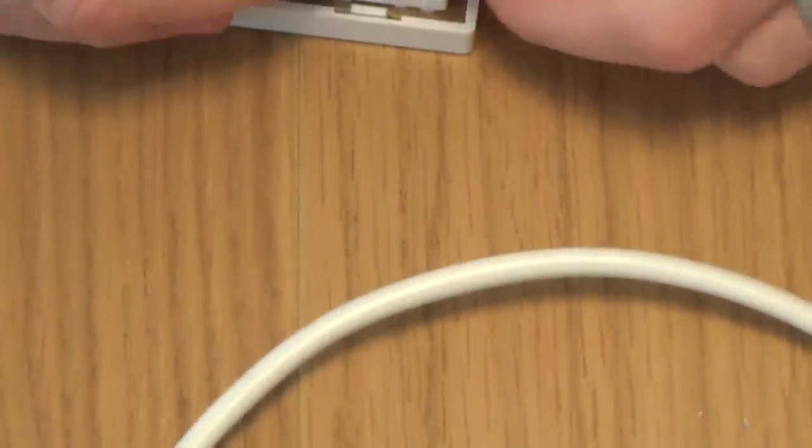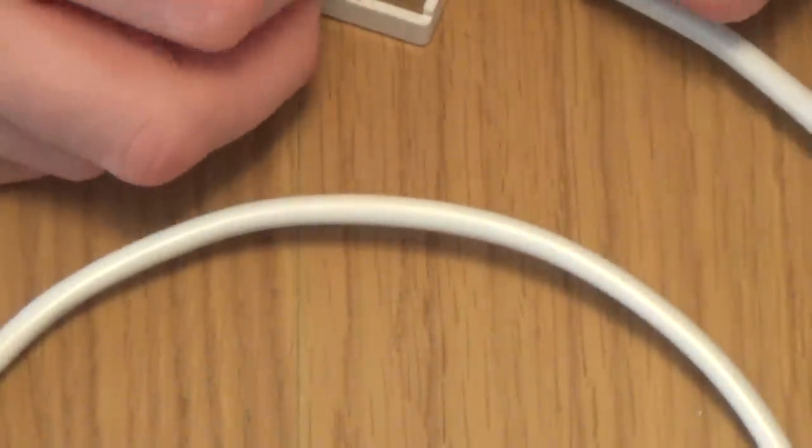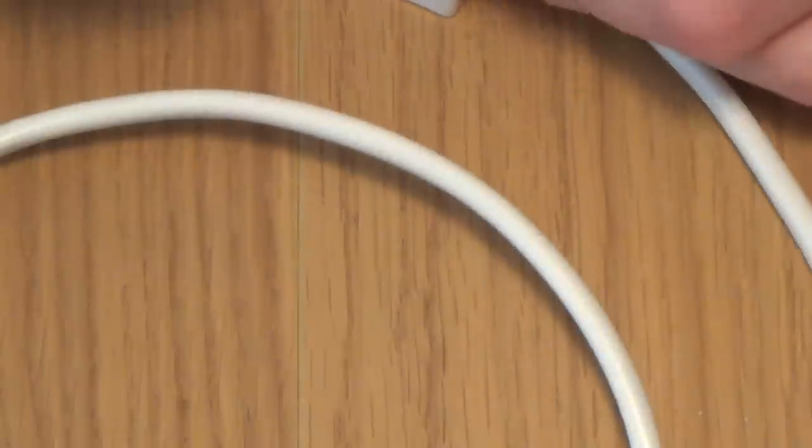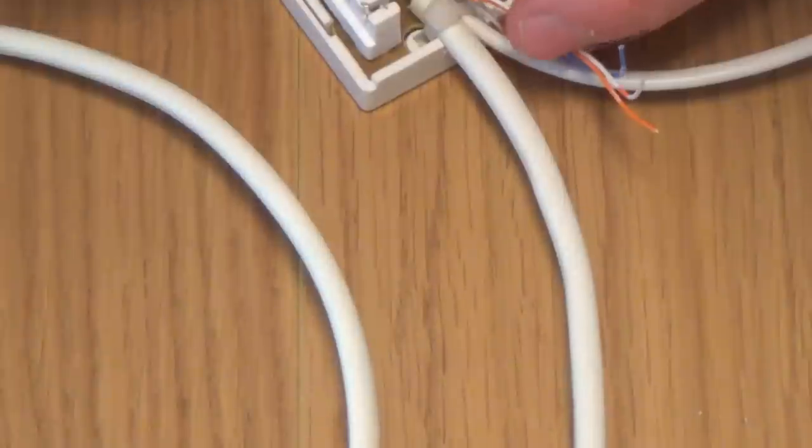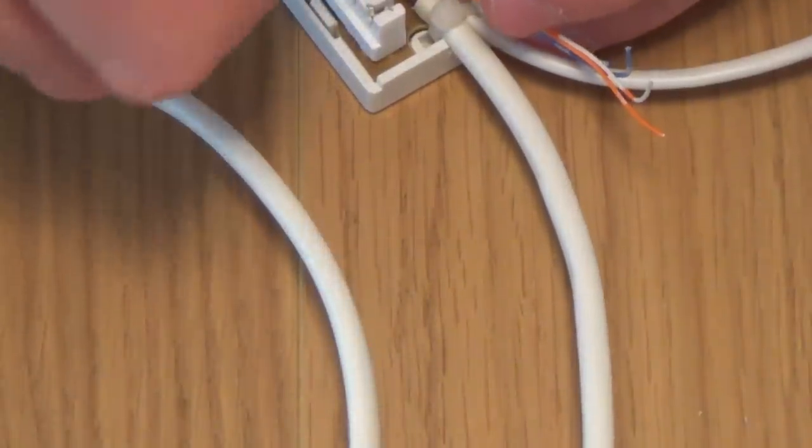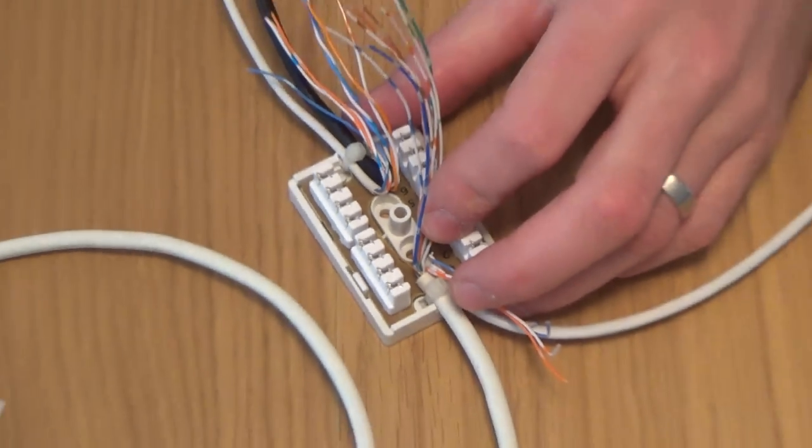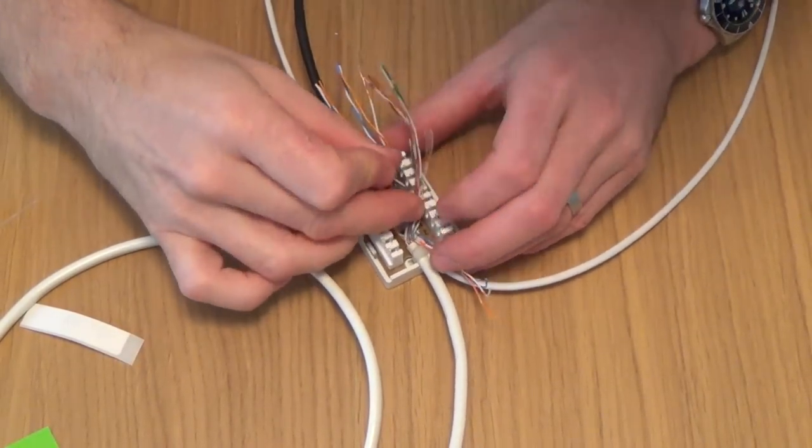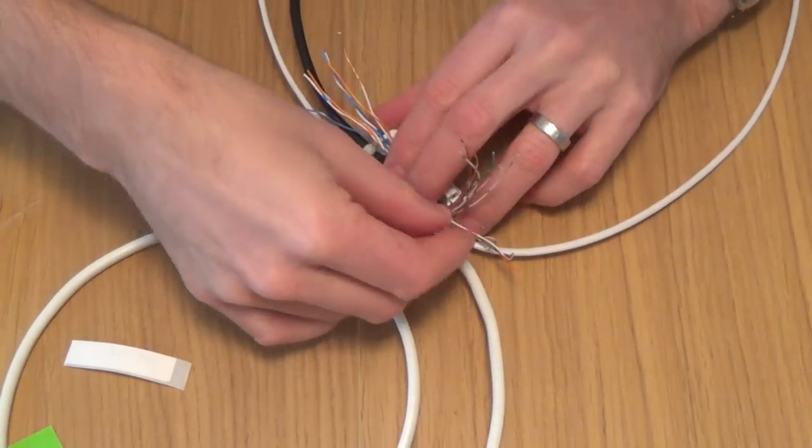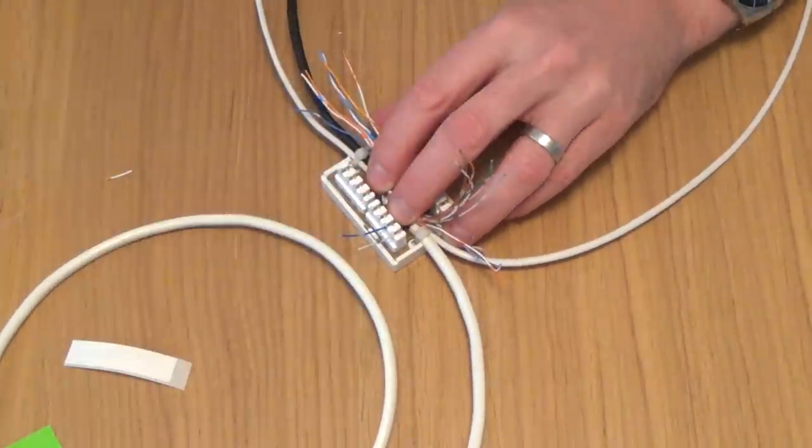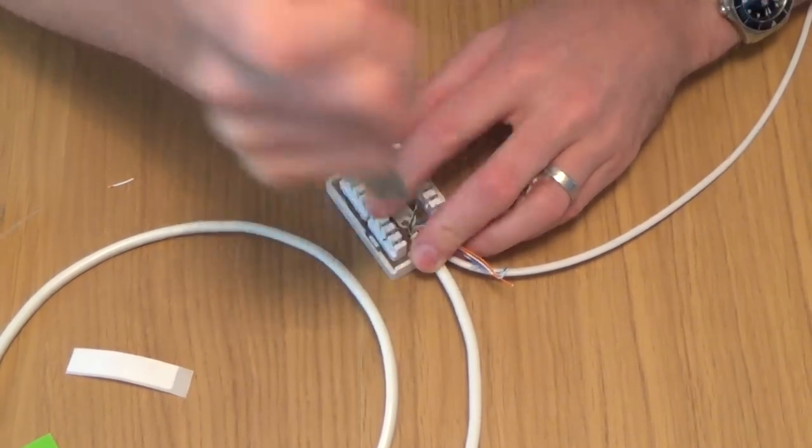So first of all, we're going to connect up the four-pair cable. So we get the blue pair. And what we'll do is zoom that out a little bit so you can see what's going on. We'll always put the white wire up top. So the white-blue is on number one.